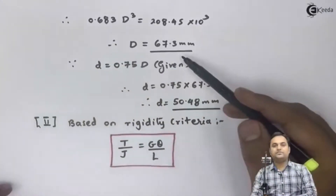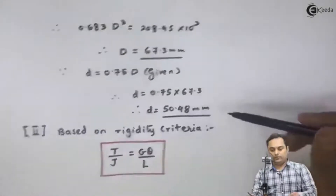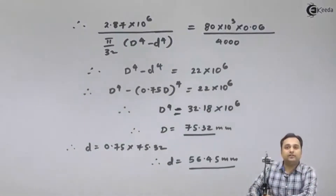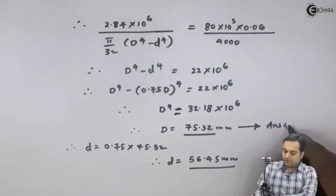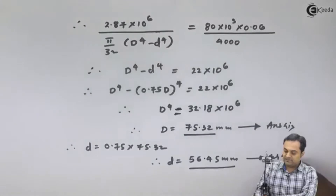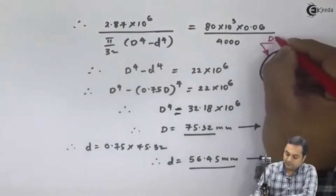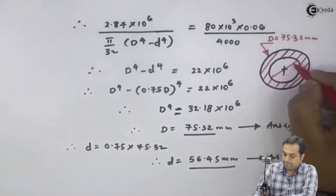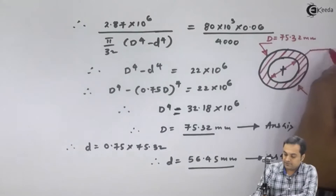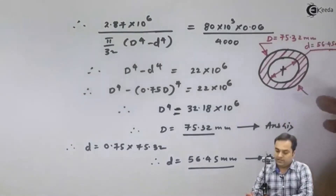Comparing the two criteria: from strength criteria external diameter was 67.3 mm and inner diameter 50.48 mm; from rigidity criteria external diameter is 75.32 mm and inner diameter 56.45 mm. It is better to select the maximum value as the diameter of the shaft. Therefore we select capital D and small d from rigidity criteria as our final answers. Drawing the cross-section of the hollow shaft: capital D equals 75.32 mm and small d equals 56.45 mm. These are the final answers and here we complete this problem.